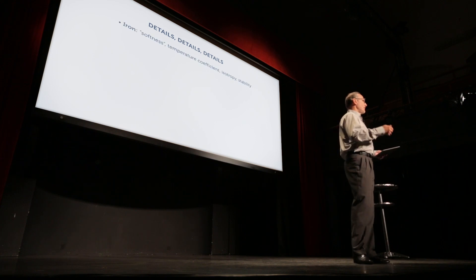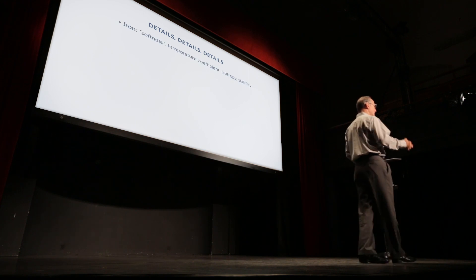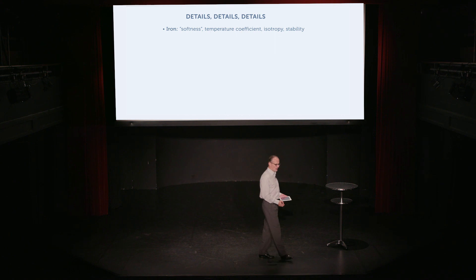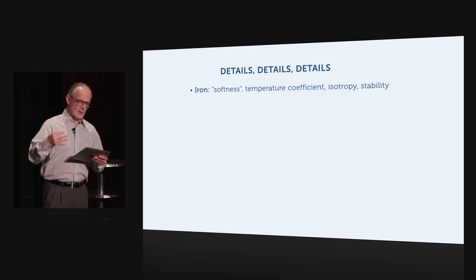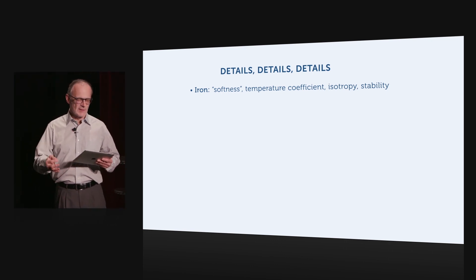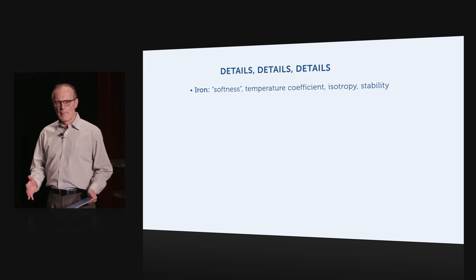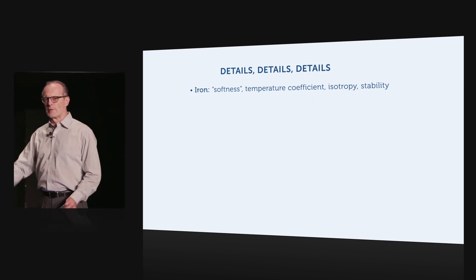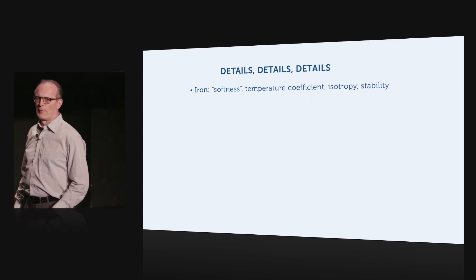First of all, there's the iron itself. Its characteristics are key to the whole performance of the flux gate. There's the softness, the temperature coefficient, the isotropy, and the stability. All these parameters have a direct influence on the final performance of the flux gate.